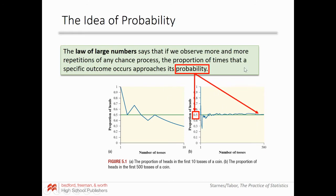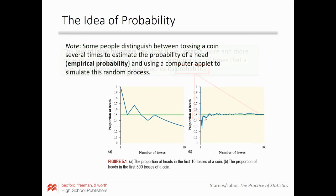Probability is what you get when you do this random process a lot of times. A note: some people distinguish between actually tossing a coin many times to estimate the probability of heads versus using a computer applet to simulate the random process. It would take a lot of work to personally flip a coin 500 times and record results, so you can use computer programming to simulate that random process.